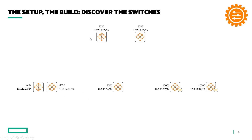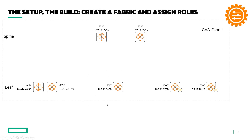The first step is to discover those switches in Aruba Fabric Composer — it's very simple. In order to discover the switches you need a minimal configuration: an IP address and an administrative user account so that AFC can get access and obtain information. The information exchange between Aruba Fabric Composer and the switches is solely based on REST APIs — no SSH, just REST APIs are used to provision, configure, and monitor those switches.